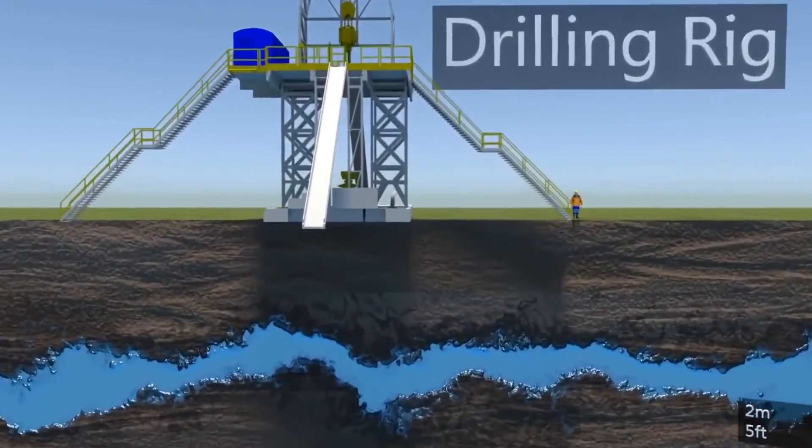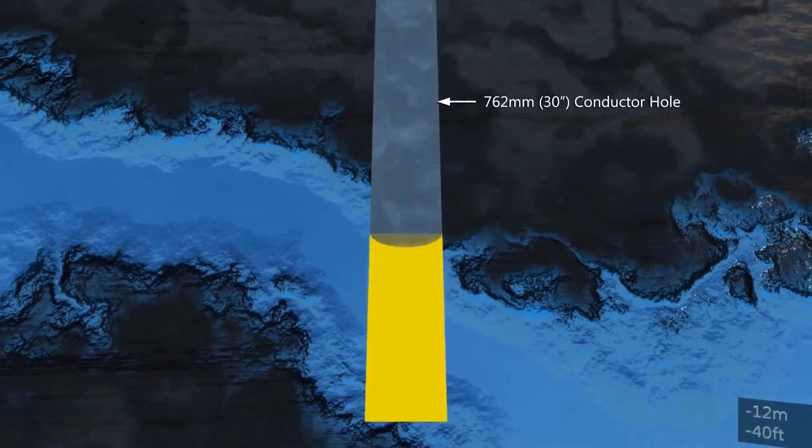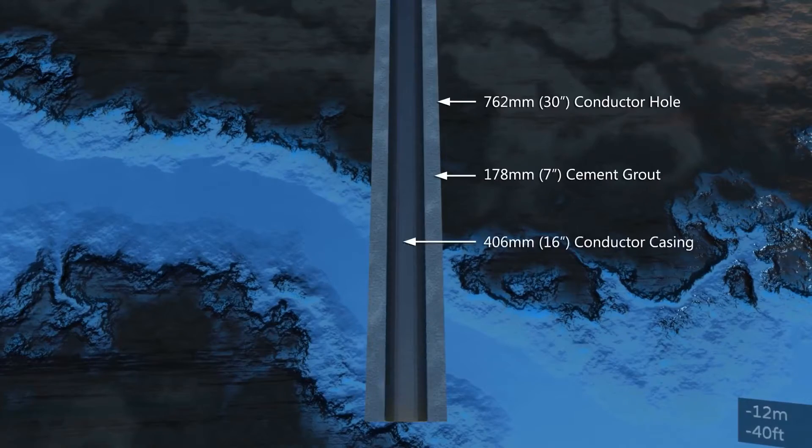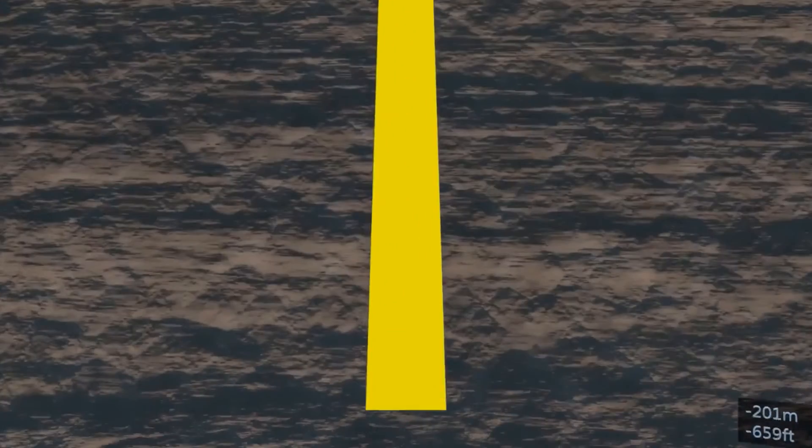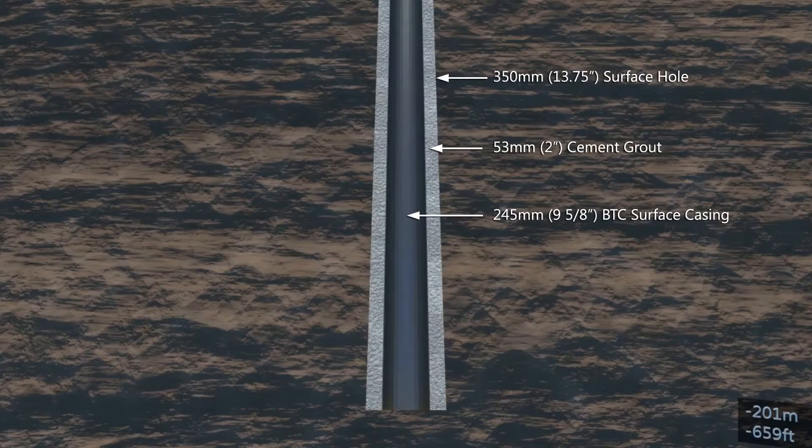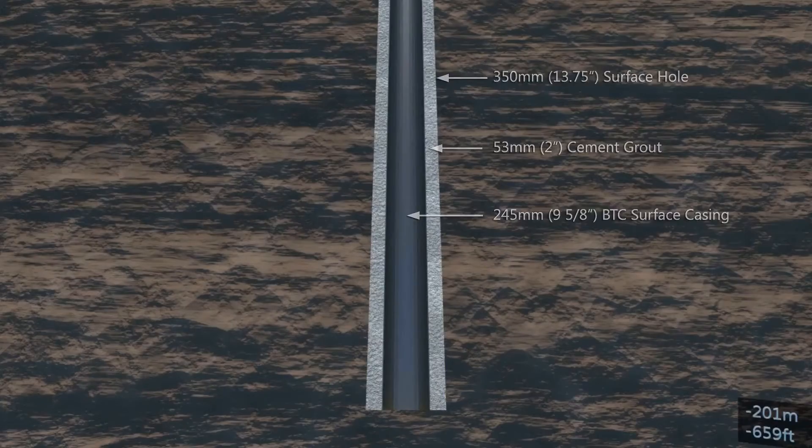The deposit is accessed via drill holes from the surface. To begin a well, a 30-inch hole is drilled to a depth of 10 meters. Then a 16-inch conductor casing is installed in the well and cemented into place. Next, a 13-3-4-inch hole is drilled to a depth below the near surface aquifers, which is approximately 200 meters, and a 9-5-8-inch surface casing is installed and cemented into place.